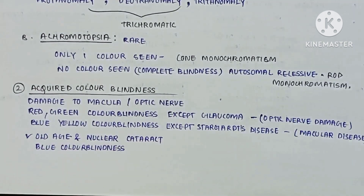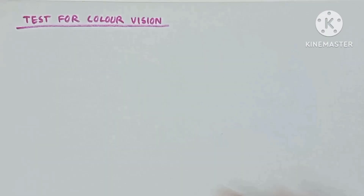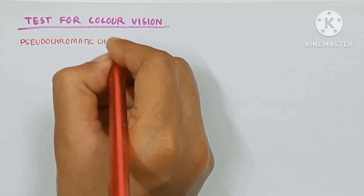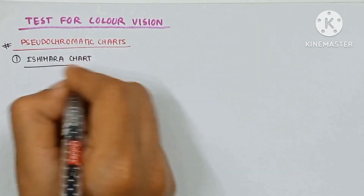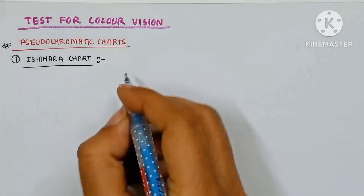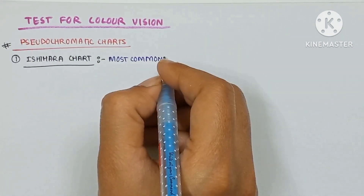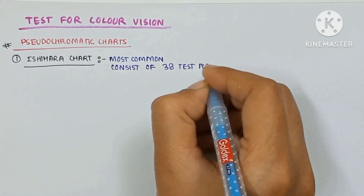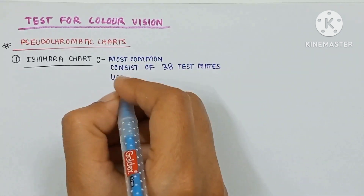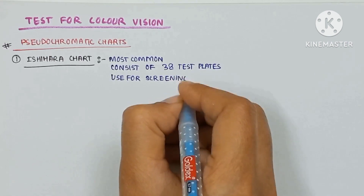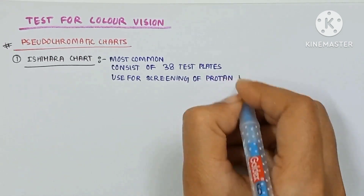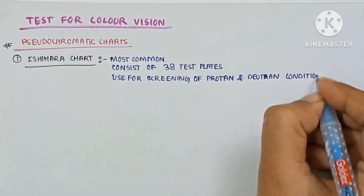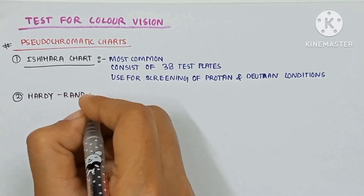Now we will read about tests for color vision. The first test is pseudochromatic charts, which includes the Ishihara charts — the most commonly used. It consists of 38 test plates and is used for screening of protan and deutan conditions. The second is the Hardy-Rand-Rittler plates.